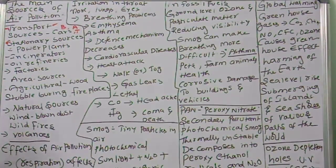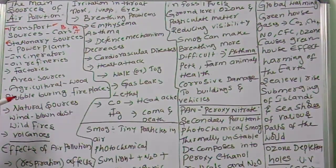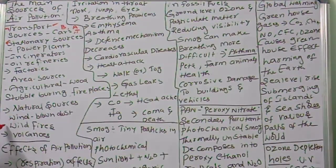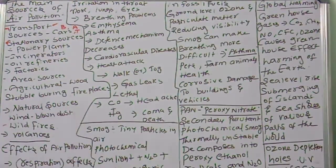Area sources include agriculture, wood and stubble burning, and fireplaces. Natural sources include wind-blown dust, wildfires, and volcanoes.